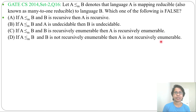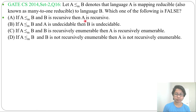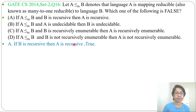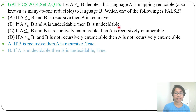I already discussed Reducibility — just go through that lecture. There are some rules and this question is directly from those rules. If you know them, you can directly solve this. Option A: if B is Recursive then A is Recursive — this is True, directly from the Reducibility rules. Option B: if A is Undecidable then B is Undecidable — this is also True, directly from that rule.